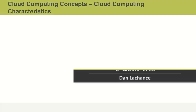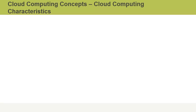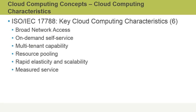In this video, I'll talk about cloud computing characteristics. There are a number of characteristics that must be in place in order to have a cloud computing environment. According to ISO IEC Publication 17788, there are six characteristics: broad network access, on-demand self-service, multi-tenant capability, resource pooling, rapid elasticity and scalability, and finally, measured service. Let's dive into each of these in more detail.